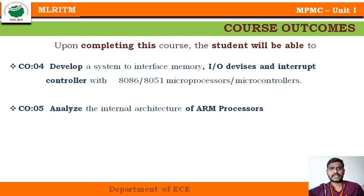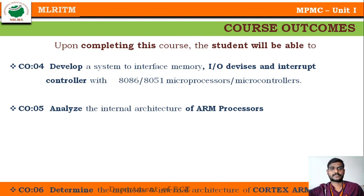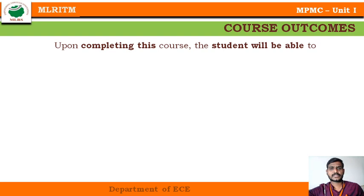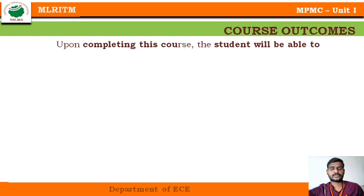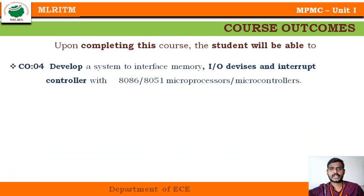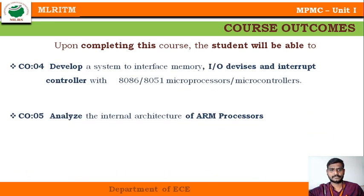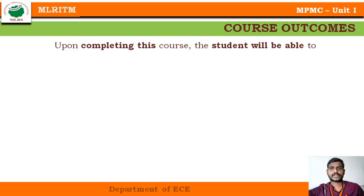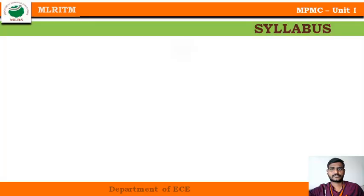The Unit 5 outcome is that students can analyze the different internal architectures of ARM processors and their modes of operation. Finally, the sixth unit covers advanced ARM architectures and features of advanced ARM and Cortex processors.